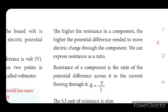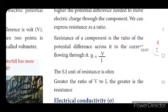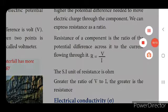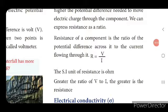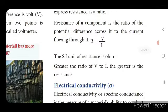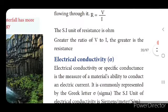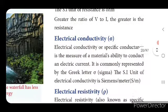We can express resistance as a ratio: resistance of a component is the ratio of potential difference across it to the current flowing through it. That is, R = V/I, where V is potential difference measured in volts and I is electric current measured in ampere. The SI unit of resistance is ohm. The greater the ratio of V to I, the greater the resistance.